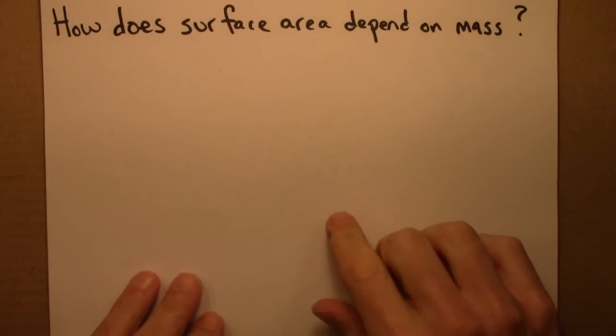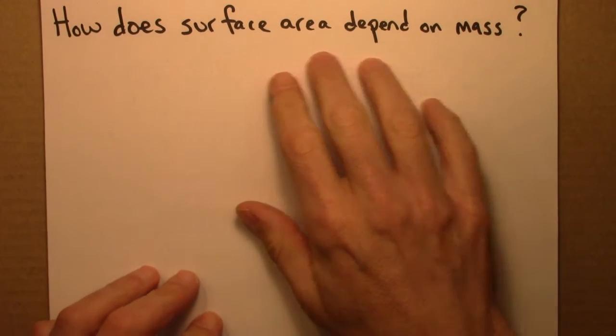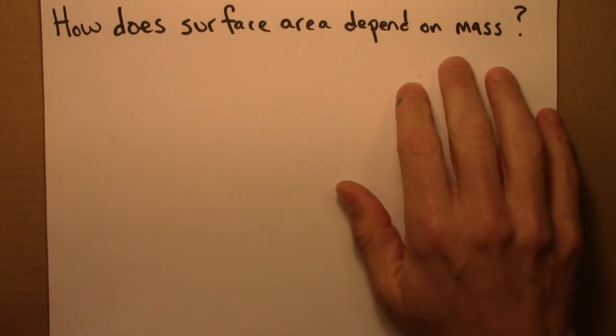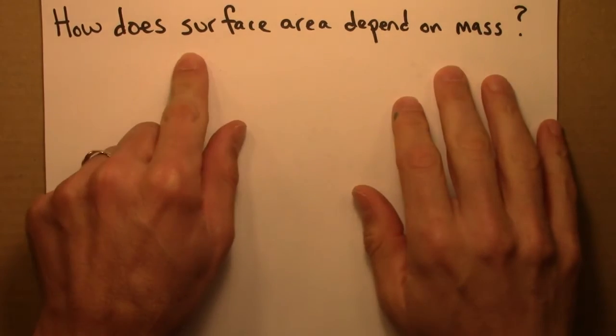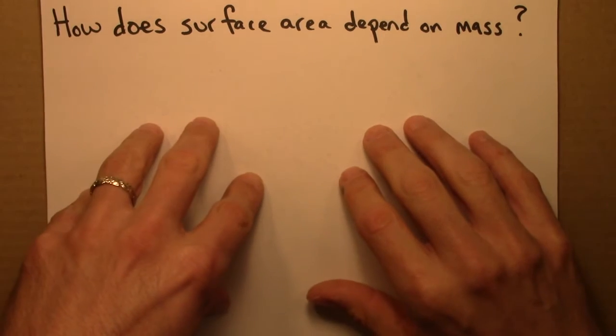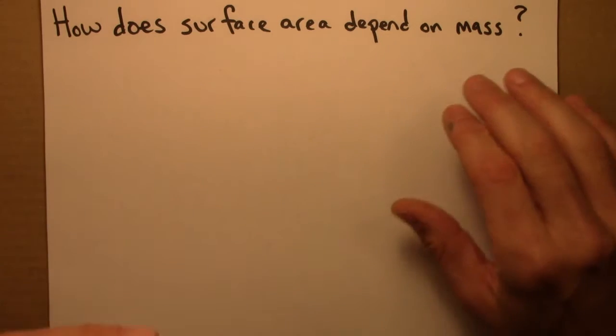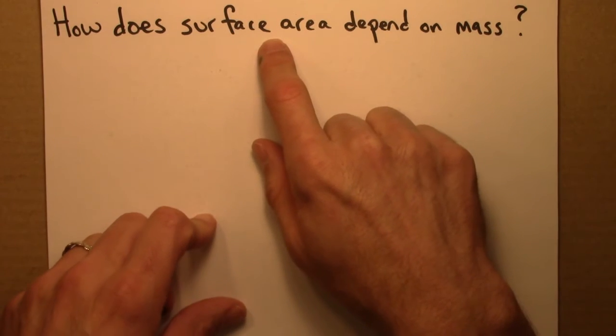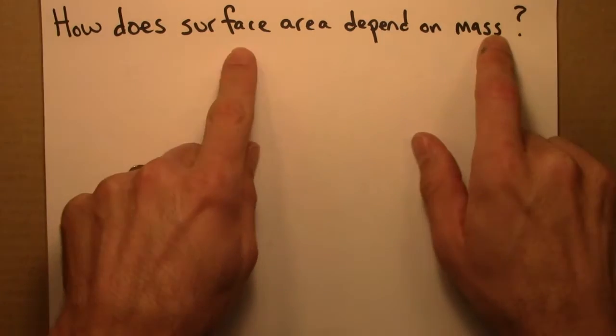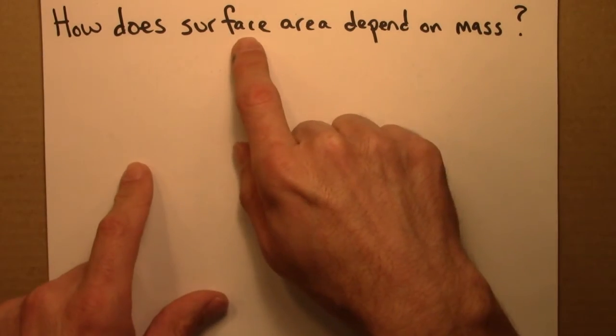Let's think about surface area and try to figure out how surface area depends on mass. The reason we're interested in surface area is that metabolic rate is determined by surface area, so we would expect metabolic rate to depend on mass the same way surface area depends on mass.